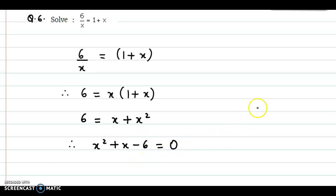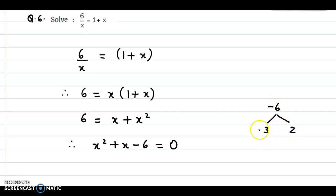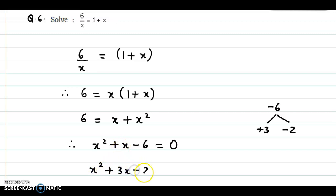And now we split minus 6 into 2 terms, and we should get a positive 1, because the coefficient of X is 1. So the two factors would be 3 and 2 — positive 3 and negative 2. So 3 minus 2 is 1, and 3 into minus 2 is minus 6. So we split the middle term as X square plus 3X minus 2X minus 6 is equal to 0.